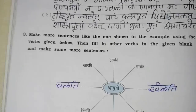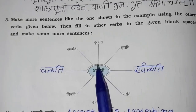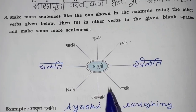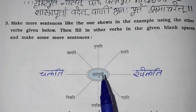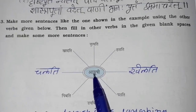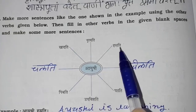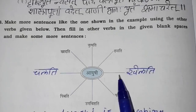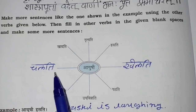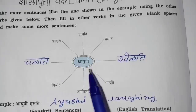Exercise No. 3. Students, यहाँ पर middle में जो एक नाम दिया हुआ है, और उसके आसपास यह सारे words हैं, आपको sentence बनाने हैं। Like Ayushi — Ayushi हसती, means Ayushi is laughing। और यहाँ पर आपकी जो दो blanks हैं, यहाँ पर दो अलग words आपको लिखने हैं। मैंने लिखा एक खेलती और चलती।